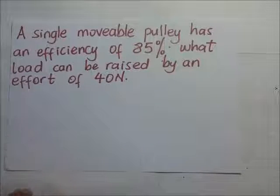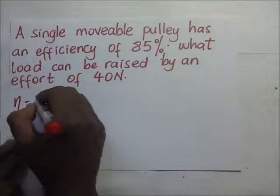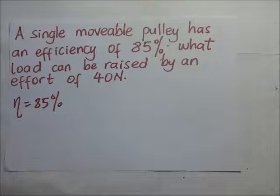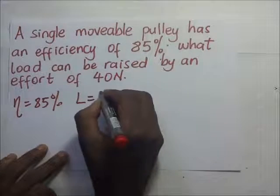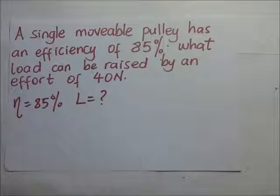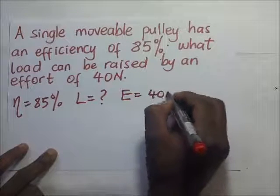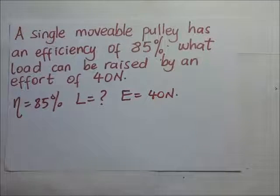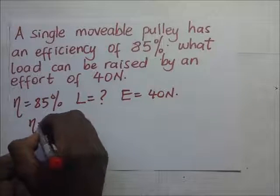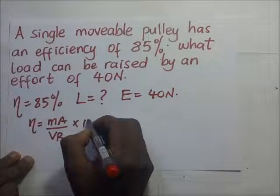A single movable pulley has an efficiency of 85%. What load can be raised by an effort of 40 newtons? We know that the efficiency is equal to mechanical advantage over velocity ratio times 100%.